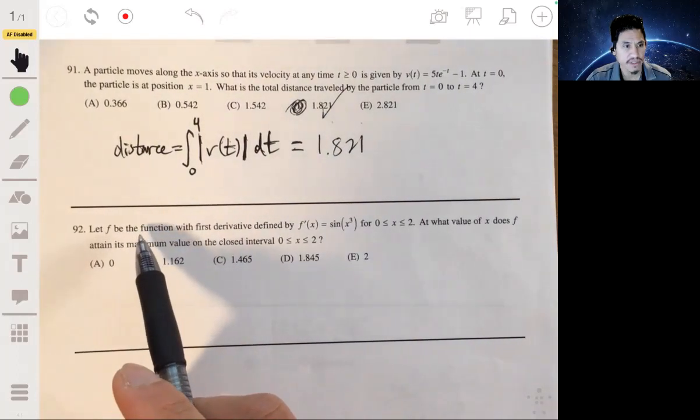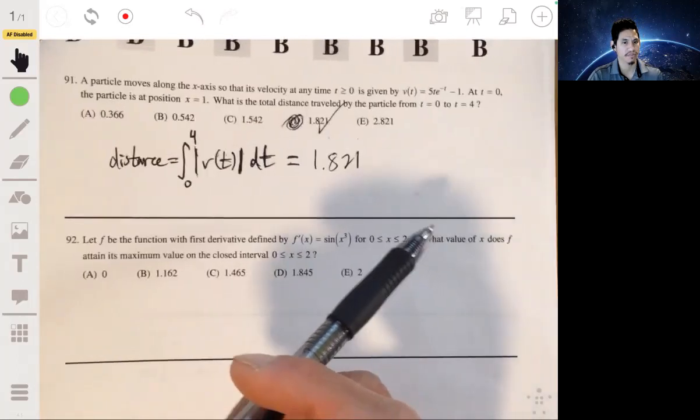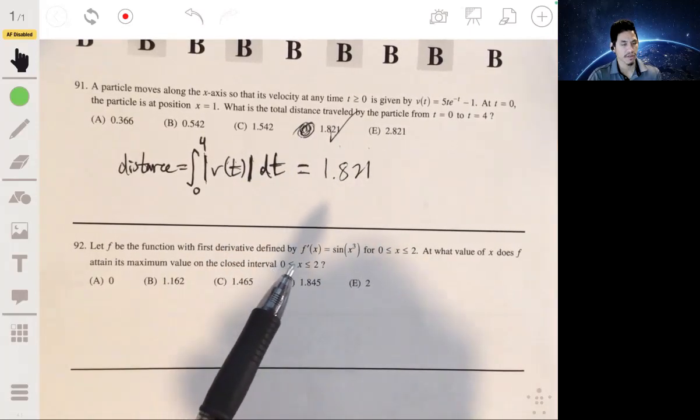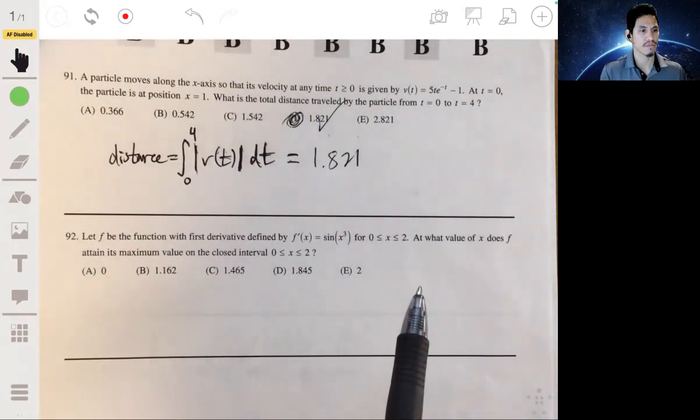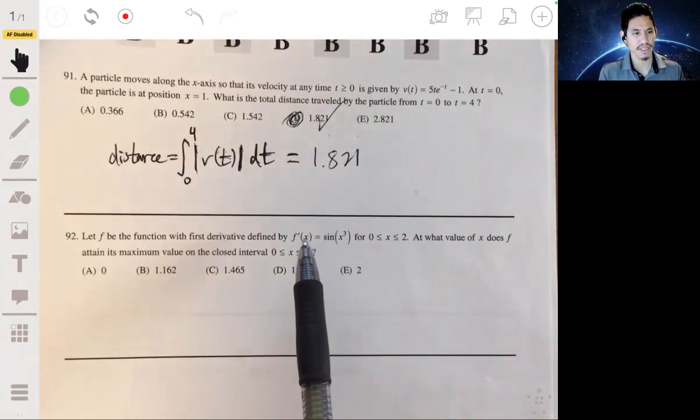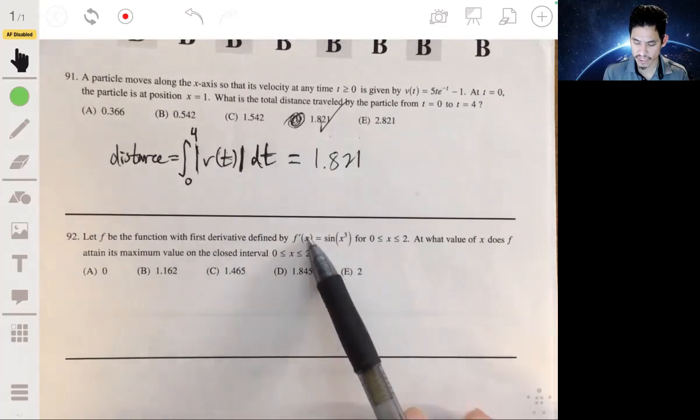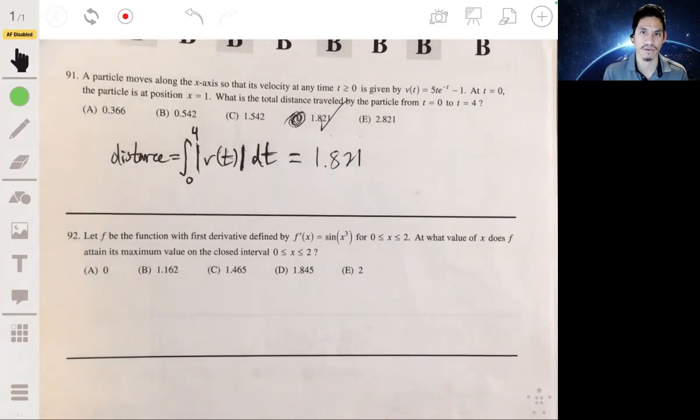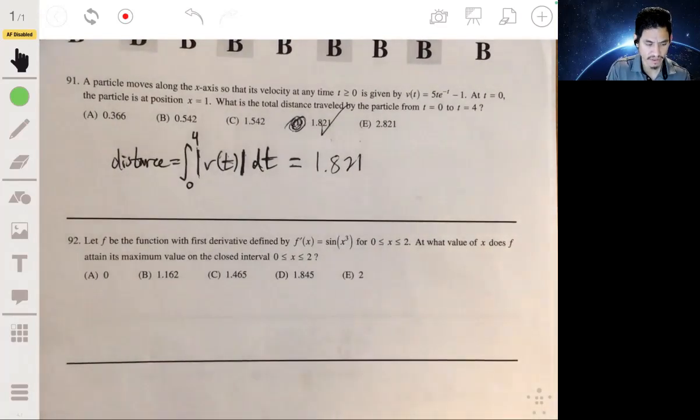And last one. So let f be the function with the first derivative defined by f prime of x equal to sine of x cubed for x between 0 and 2. What value of x does f attain its maximum value on interval from 0 to 2, closed interval from 0 to 2? Okay. So you essentially just have to see where the derivative is positive and look at the endpoint for once it stops becoming positive. Because when it's positive, the function is increasing. And you want to basically look for the interval that has the longest duration of increasing values. And since it's 0 to 2, it's usually going to be pretty straightforward once you graph it. So let's go to a graph.